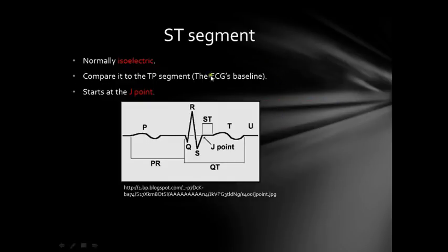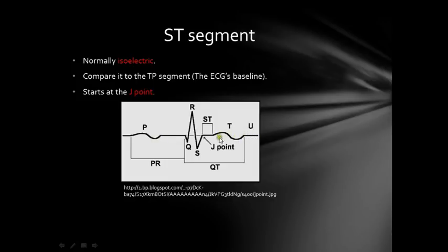The sixth thing is the ST segment — it is called a segment, not an interval. Normally it is isoelectric, starting from the J point, which is where the S wave ends and the ST segment begins. The ECG's baseline for comparison is the TP segment — the flat region between the T wave and the next P wave. You can see the ST segment is at the level of the TP segment — this is a normal ST segment.